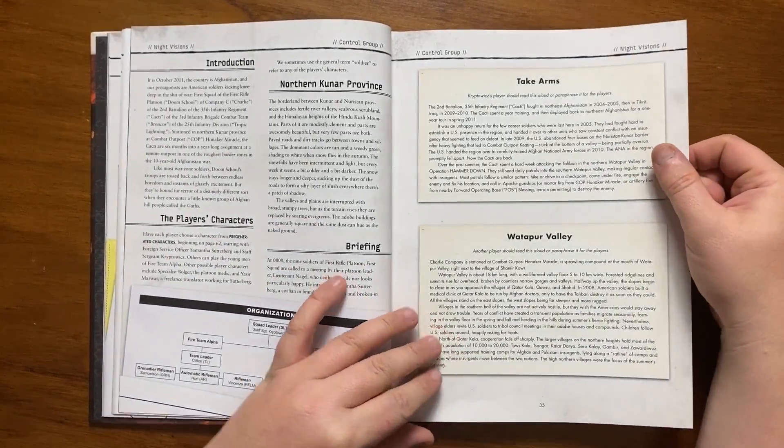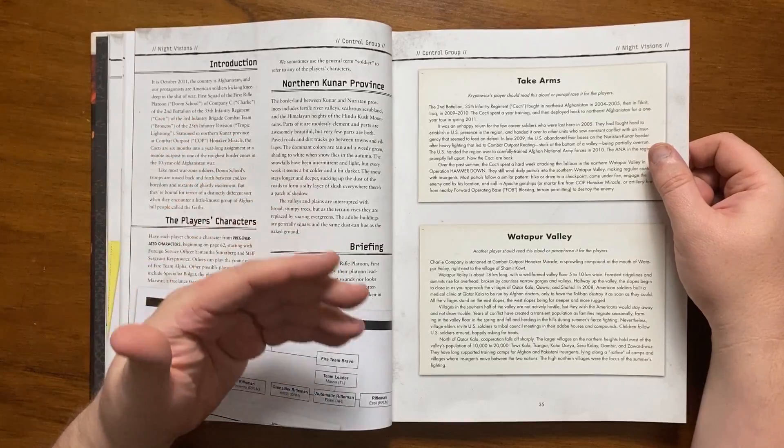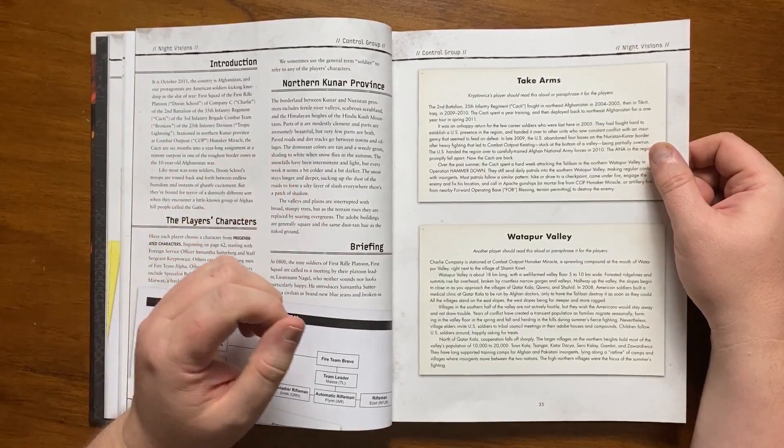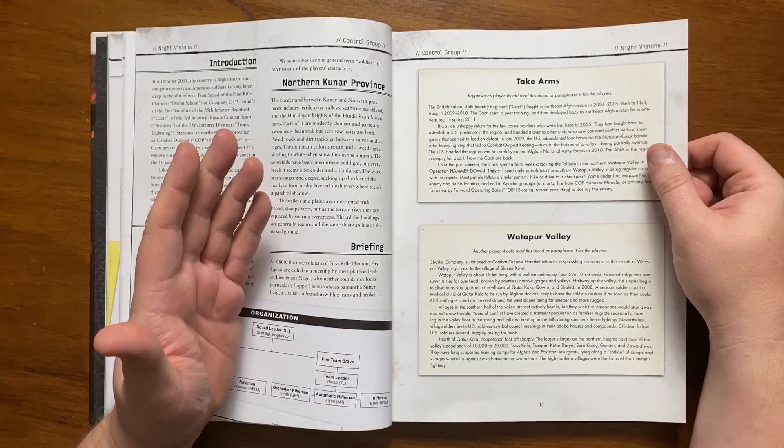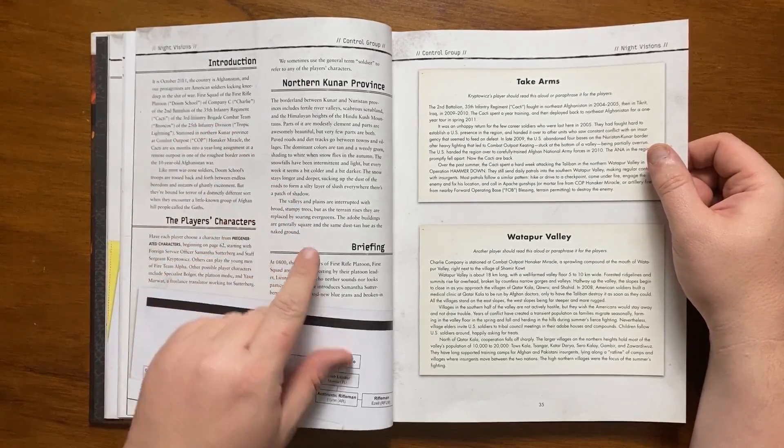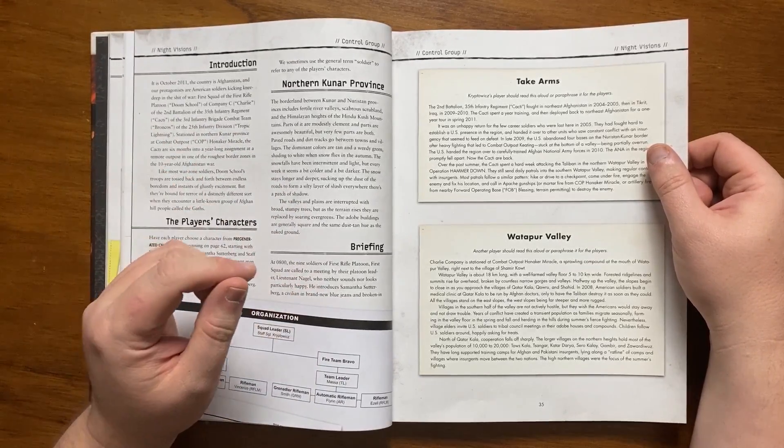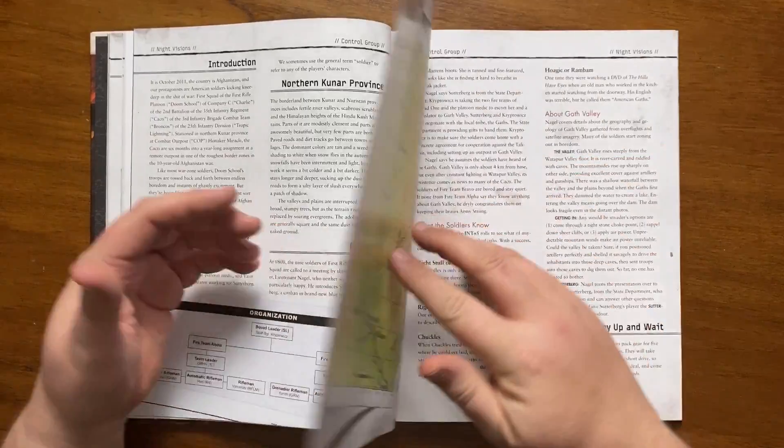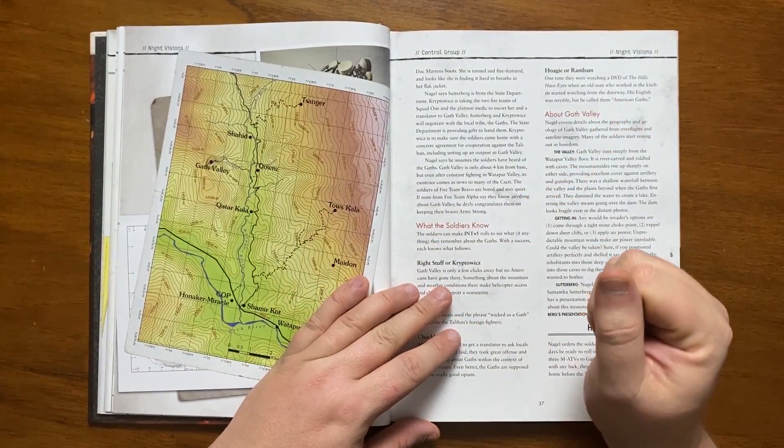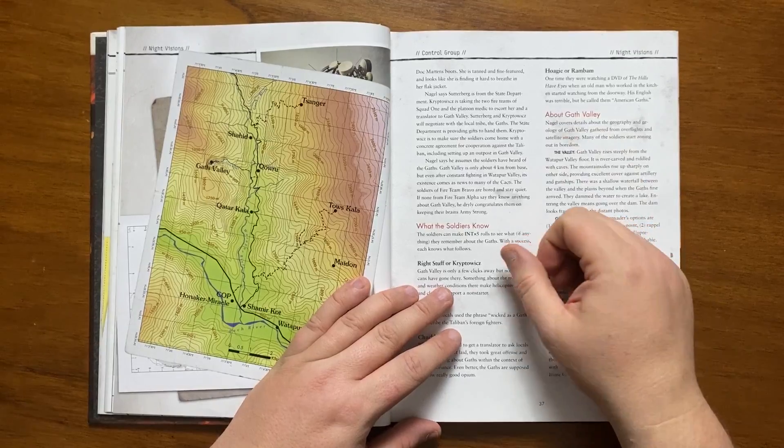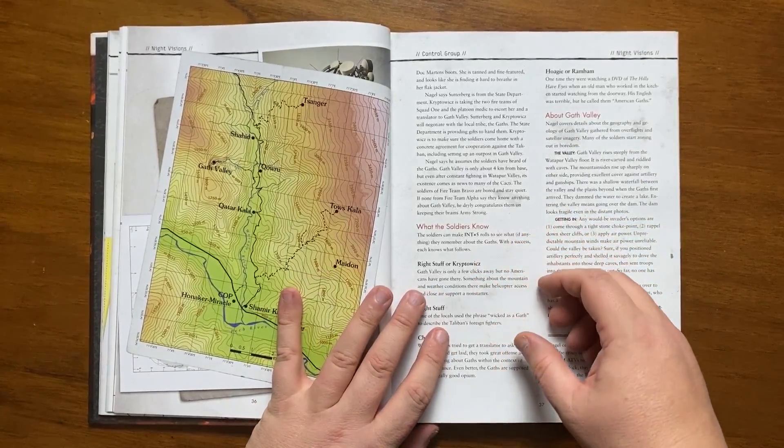The organisational structure is detailed here and a few handouts of information to read to the players are here. It gives us some information on Northern Kunar province, describing it as a place of fertile valleys and dusty plains with dirt tracks as roads between towns and villages. The 9 soldiers are called to a meeting at 0800 hours by the platoon leader, Lieutenant Nagel, who introduces Samantha Sutterberg, someone who is clearly a civilian.